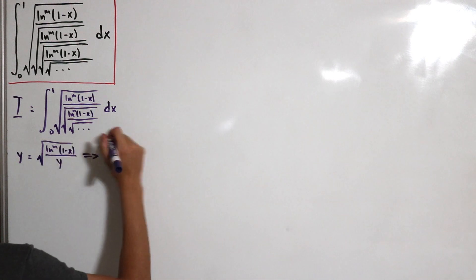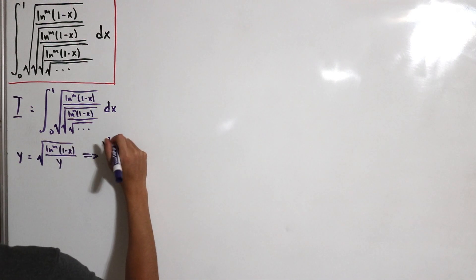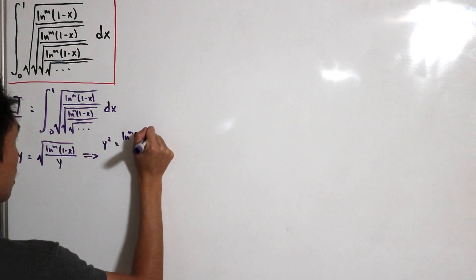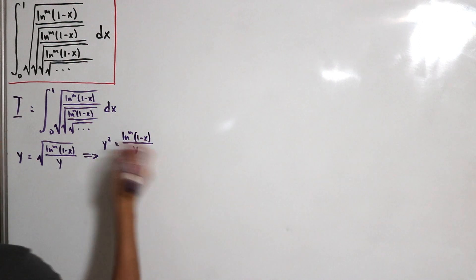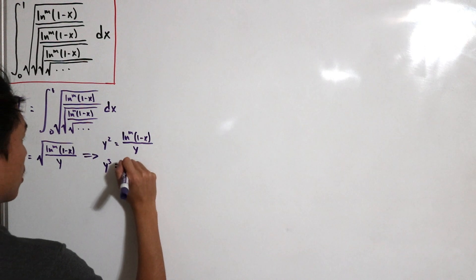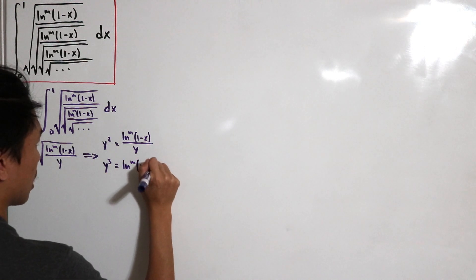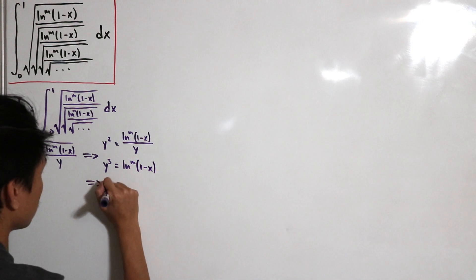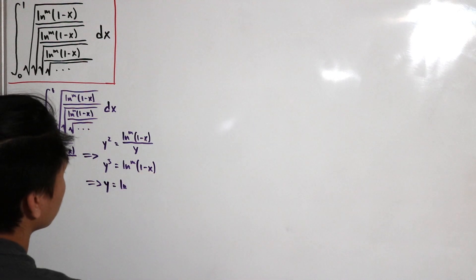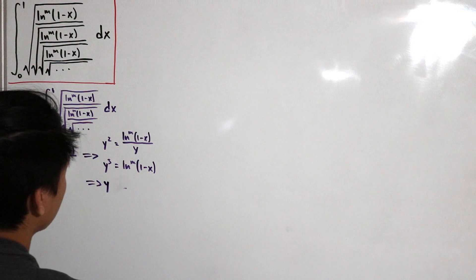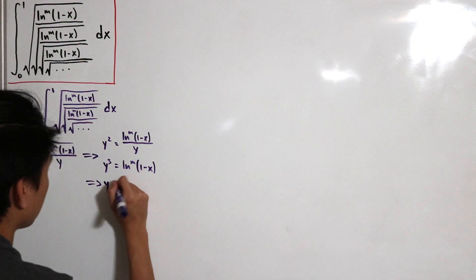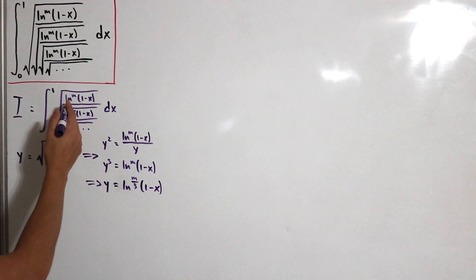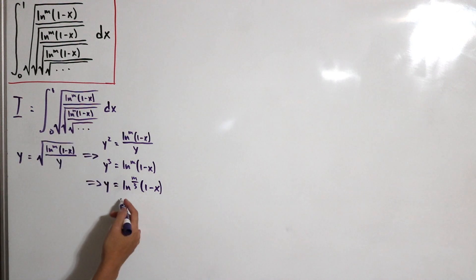We square both sides: y² equals ln^m(1 minus x) divided by y. Then multiply y to both sides: y³ equals ln^m(1 minus x). Take the cube root of both sides, so y equals ln^(m/3)(1 minus x). Now we can substitute our nested radicals for our y value.